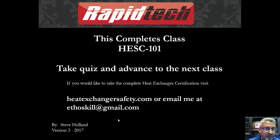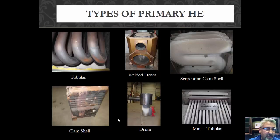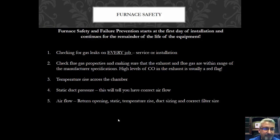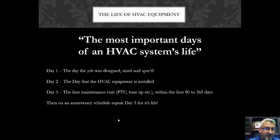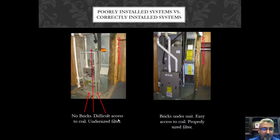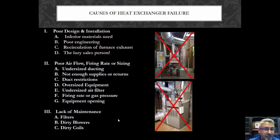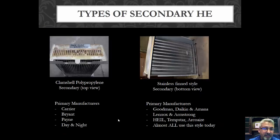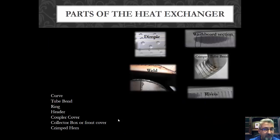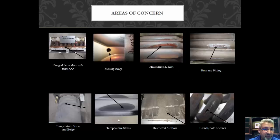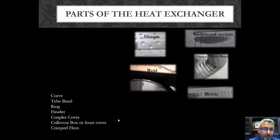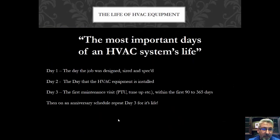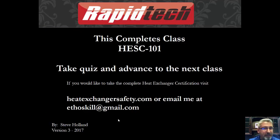If you want a quick view of what else we offer: we get into the different types of primary heat exchangers in the second course, furnace safety, the life of HVAC equipment, properly installed systems, causes of heat exchanger failures, and how to inspect them. We get into all the types of secondaries, the parts of the heat exchanger, where they fail, and areas of concern. My name is Steve Holland with Rapid Tech. I hope you enjoyed this course, and until next time, thank you.